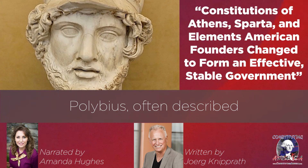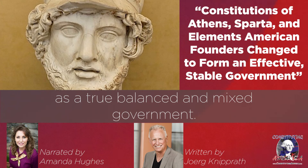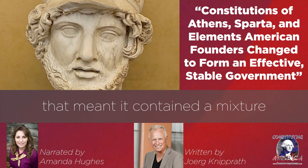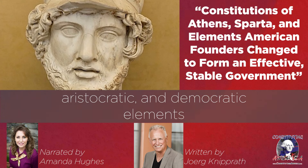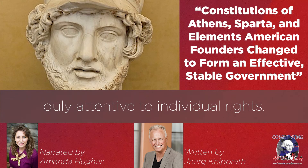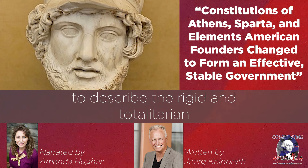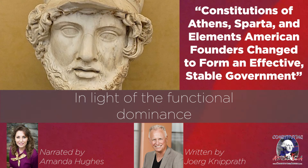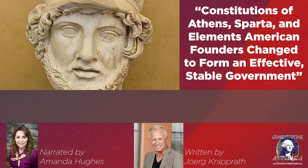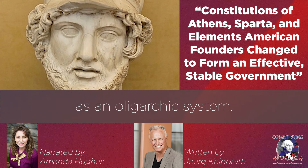Polybius, often described as the founding light of constitutional and political studies, described the Spartan system as a true, balanced, and mixed government. In the classic understanding, that meant it contained a mixture of monarchic, aristocratic, and democratic elements balanced in harmony to produce an effective government duly attentive to individual rights. It seems unpersuasive to describe the rigid and totalitarian Spartan society in that manner, in light of the functional dominance of the council with its life tenure and its selection from the upper levels of Spartan society. One might more readily classify Sparta as an oligarchic system.